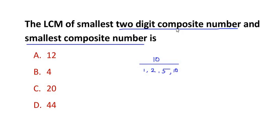The smallest composite number means they are talking about one digit. One digit starts with 4, because 4 can be divided by 1, 2, and 4 as we had seen previously. So they want us to find the LCM between the two.